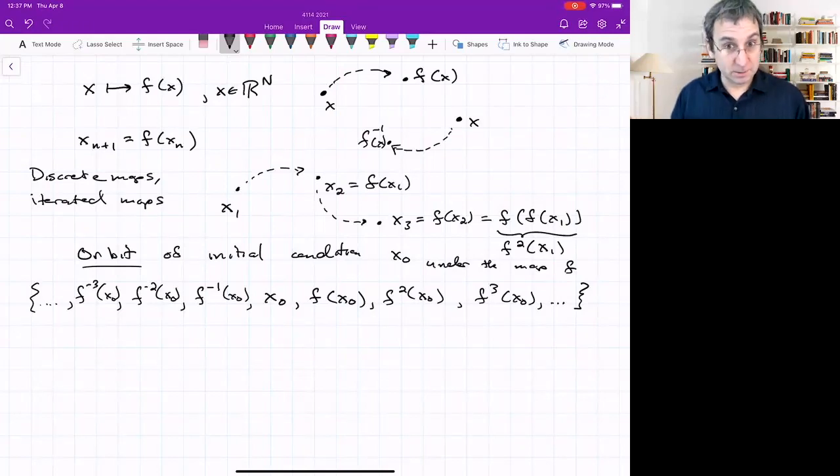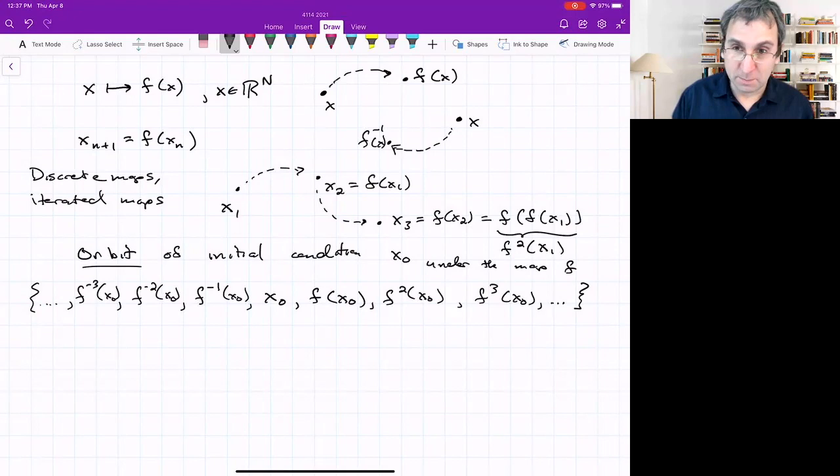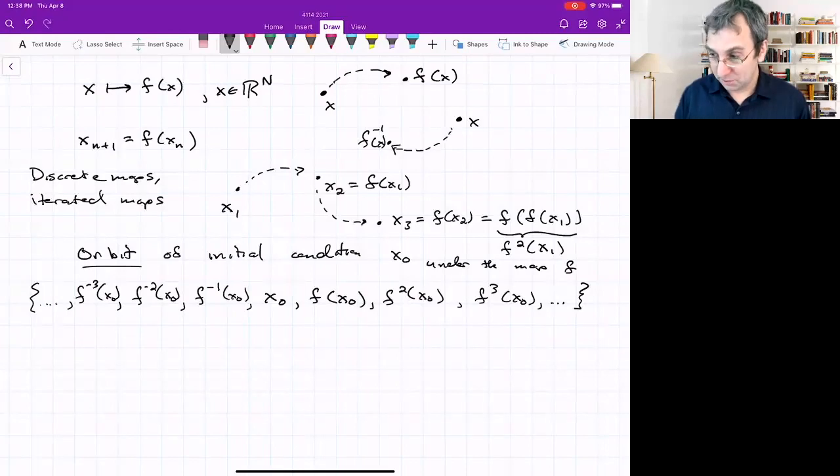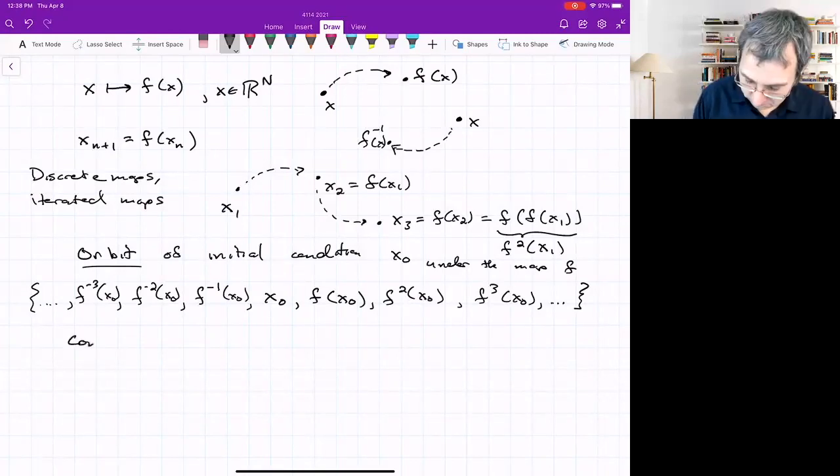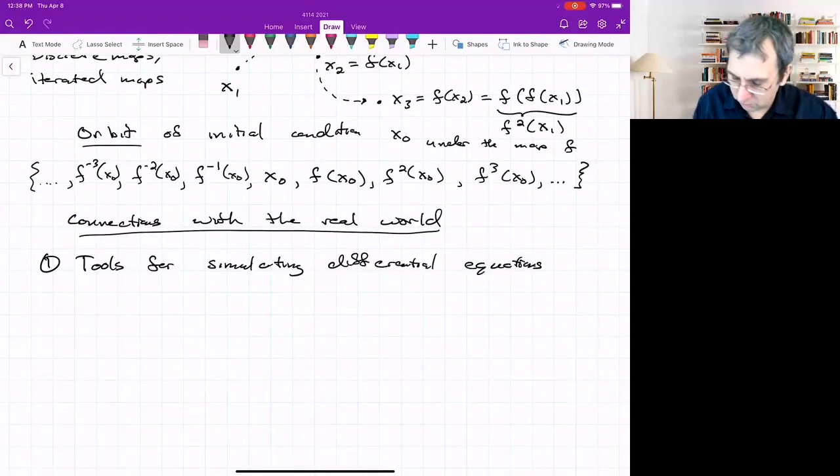If you think of dynamical systems and nonlinear dynamics is just another term for the mathematical subject of dynamical systems, the two main categories are continuous dynamical systems described by differential equations, which we've talked about a lot. The other category are these discrete time dynamical systems or maps.